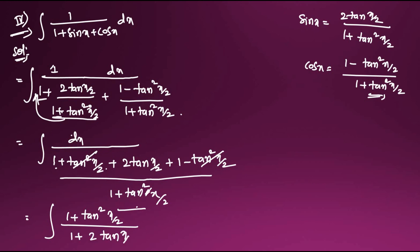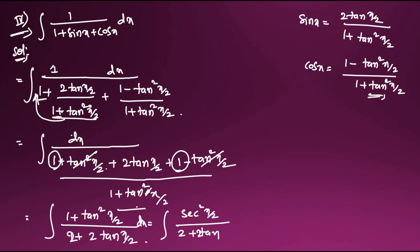So the integral simplifies to integral of (1 + tan²(x/2))/(2 + 2tan(x/2)) dx. Since 1 + tan²(x/2) = sec²(x/2), this becomes integral of sec²(x/2) / (2(1 + tan(x/2))) dx.